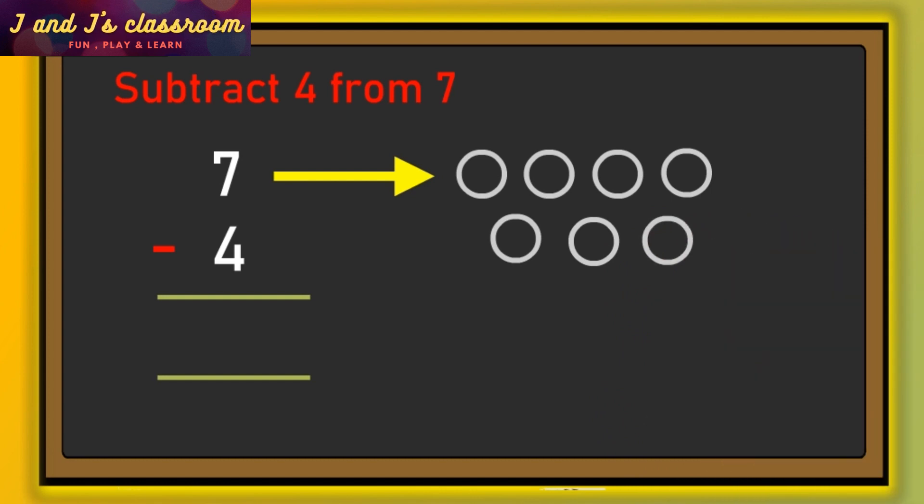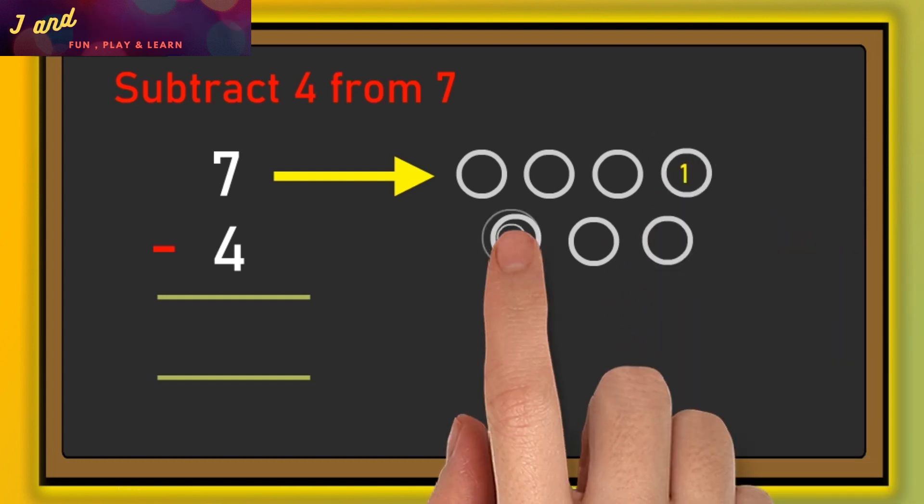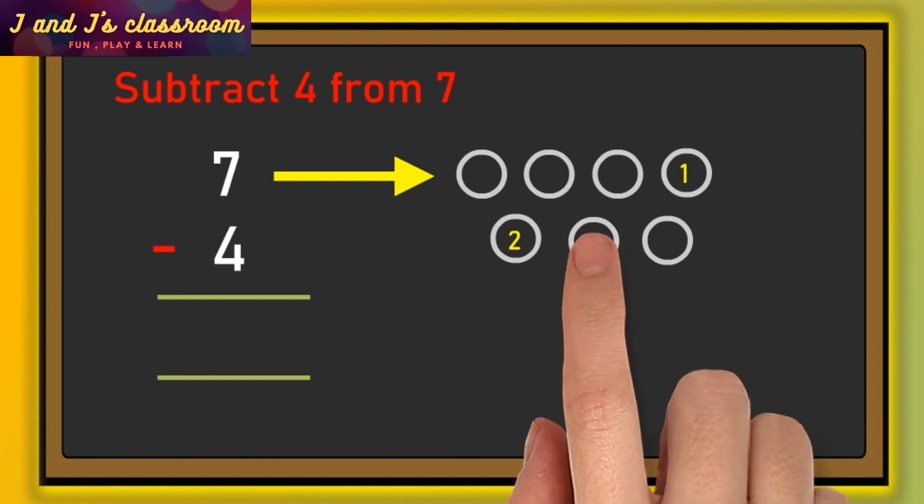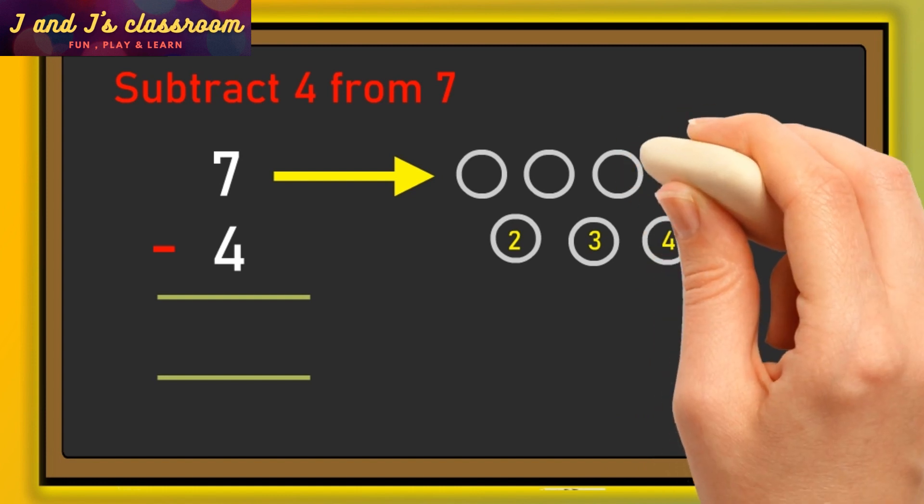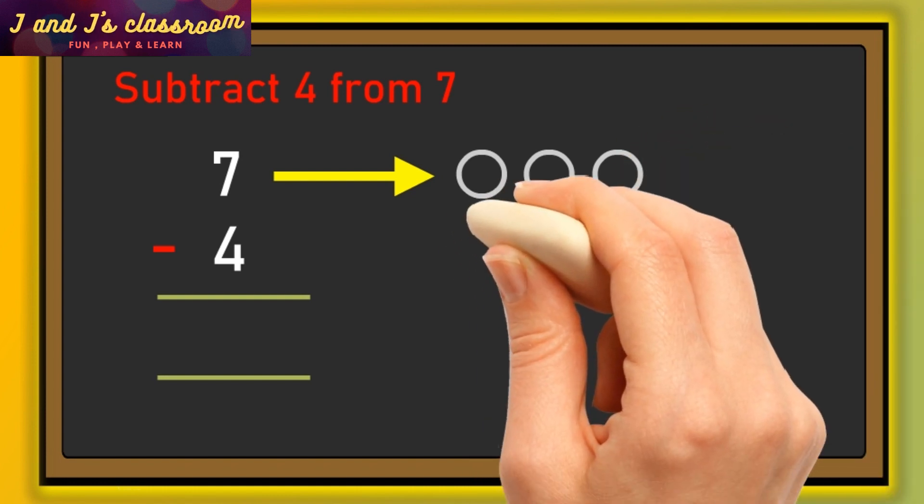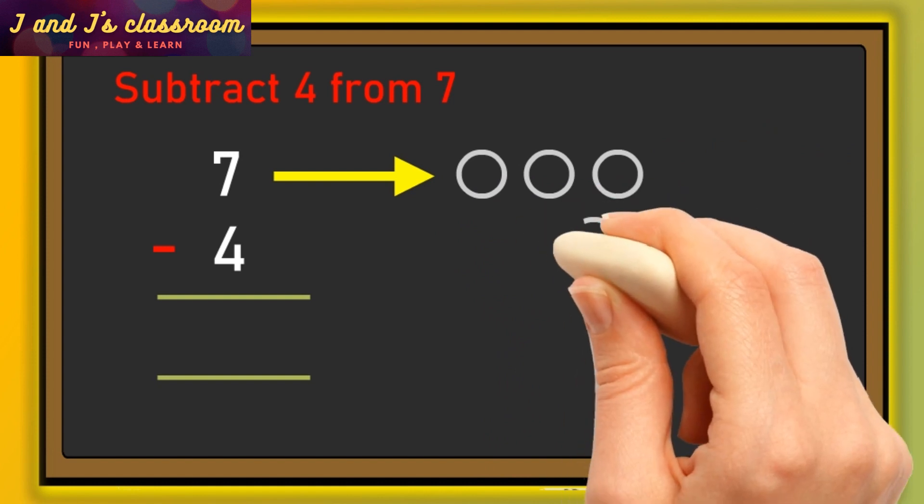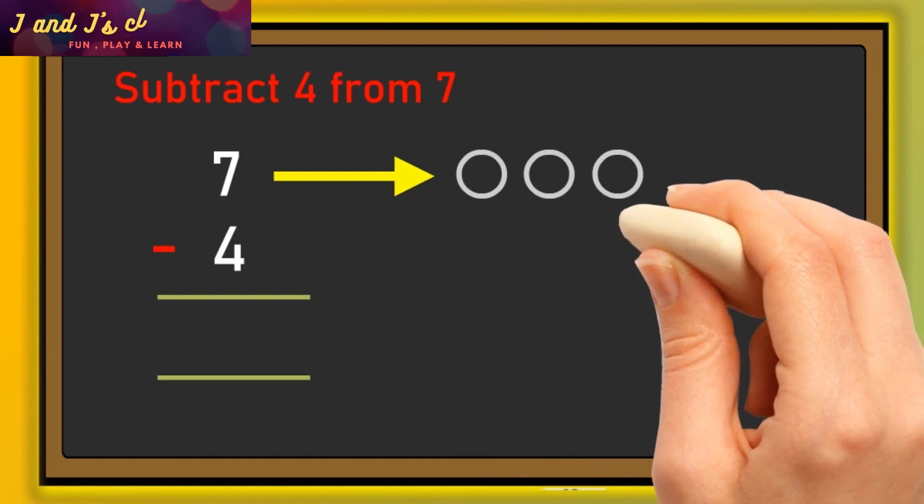The second number is four, so write the numbers one, two, three, four, like this. Now erase those four circles: one, two, three, four.